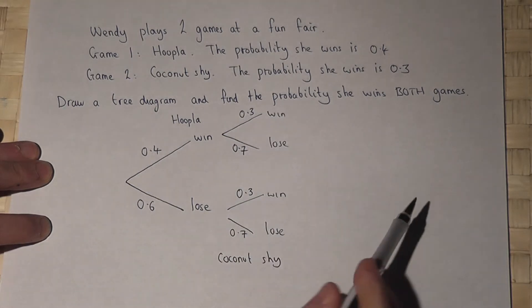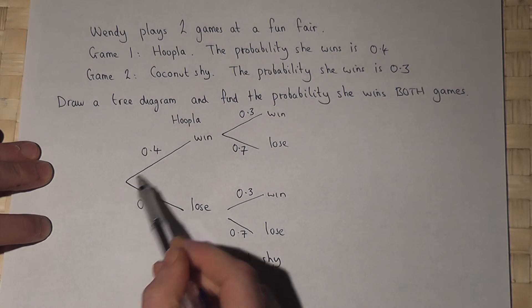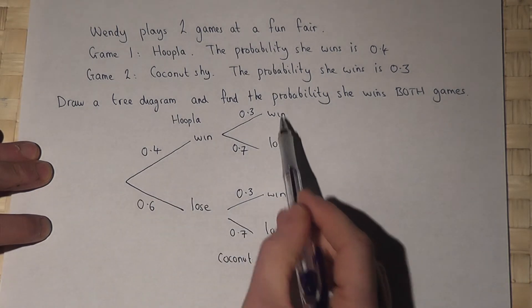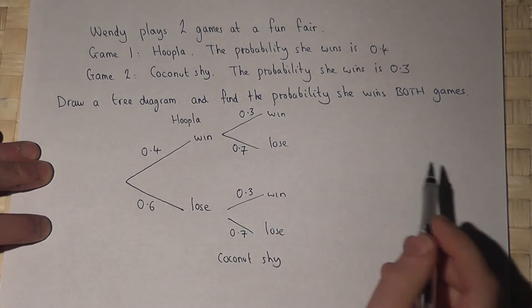So this tree diagram is now completed. We've got the branches labelled win-lose, win-lose, win-lose. And we put the chance of winning or losing above or below the branches.